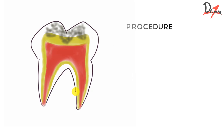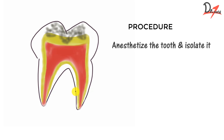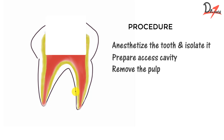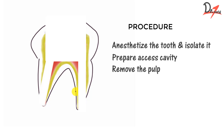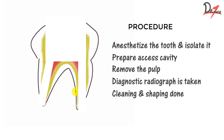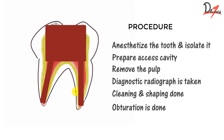The single-visit pulpectomy procedure: first anesthetize the tooth and isolate it, prepare the access cavity, remove the coronal pulp, de-roof the pulp chamber, and remove all pulp tissue. Irrigate with saline, then take a diagnostic radiograph by inserting a diagnostic file, shape the canal while flushing out all debris and dentine shavings, dry the canal with a paper point, then obturate completely, sealing the coronal and radicular pulp. Finally, place the final restoration and the stainless steel crown.